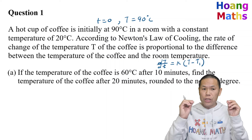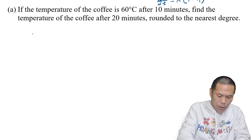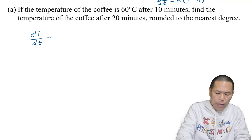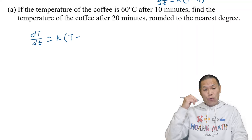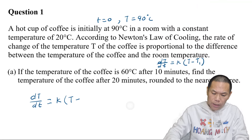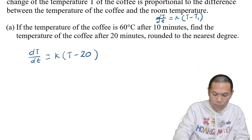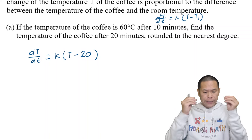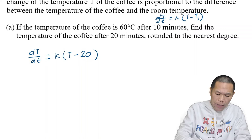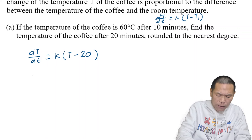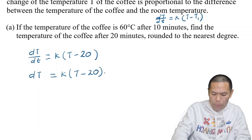First we need to find the equation for this situation. We know that dT/dt is k times (T minus the room temperature). In this case the room temperature is 20 degrees Celsius, so T1 is 20. Now to solve this, I multiply both sides by dt, so d(capital T) equals k times (T minus 20) dt.